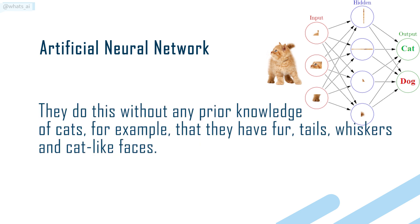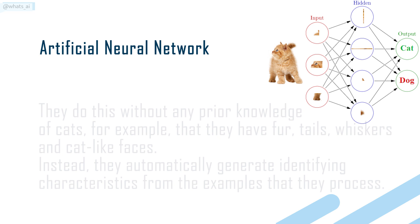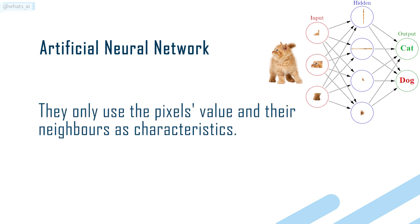They do this without any prior knowledge of cats — for example, that they have fur, tails, whiskers, and cat-like faces. Instead, they automatically generate identifying characteristics from the examples that they process. They only use the pixel's value and their neighbors as characteristics.